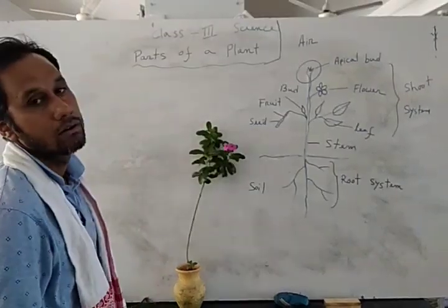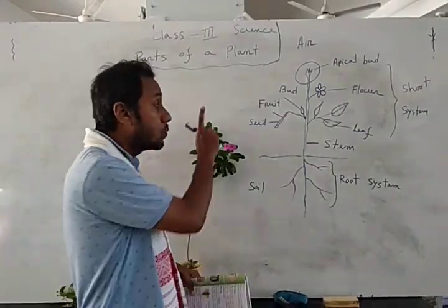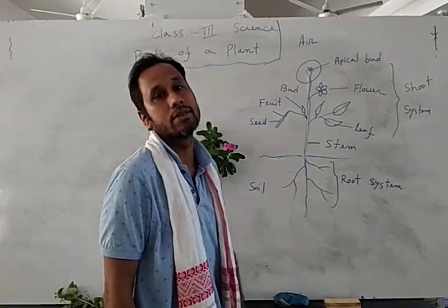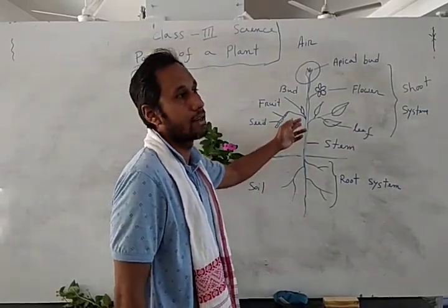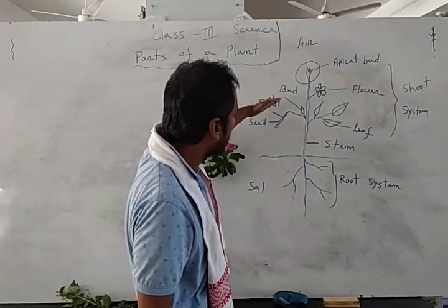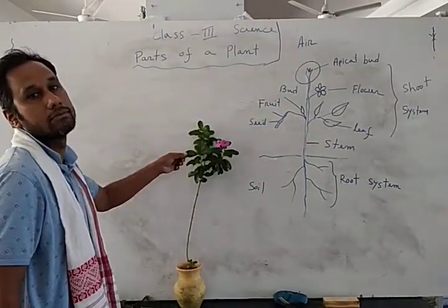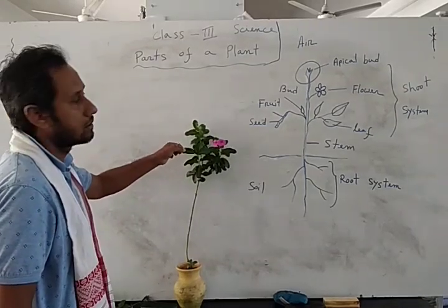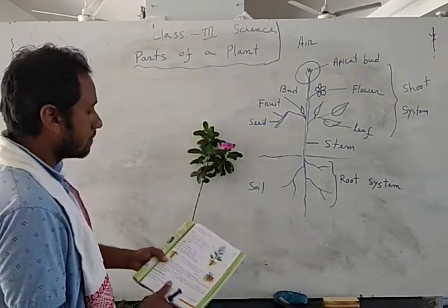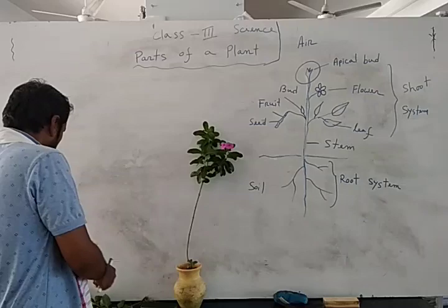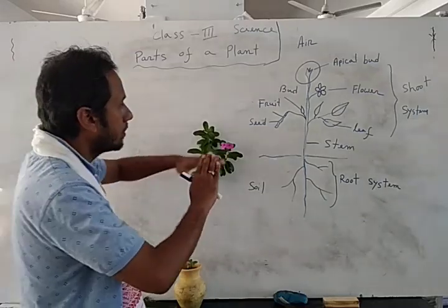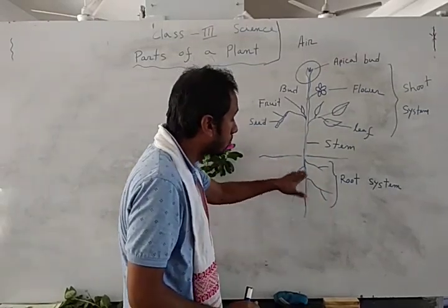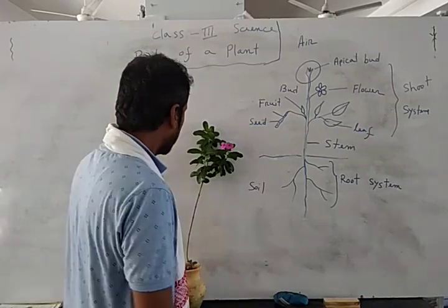A plant mainly contains two parts. One is the root system — the root collects all the water for the plant. The other part grows above the soil: green leaves make food for the plant with the help of the green pigment called chlorophyll. Now step by step we will go deeper inside the plant.